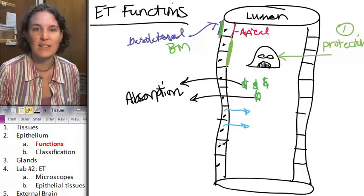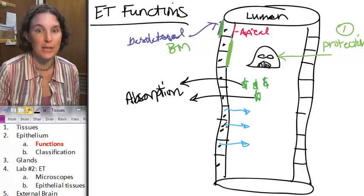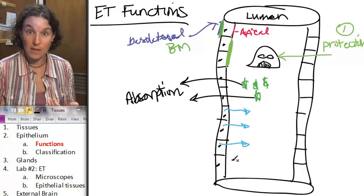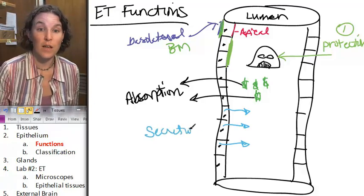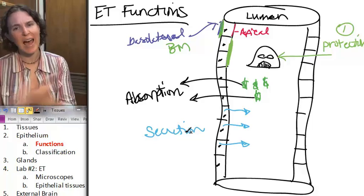And that is called secretion. There's various things that can be secreted into spaces. Secretion is when the epithelium can send something from inside it out.